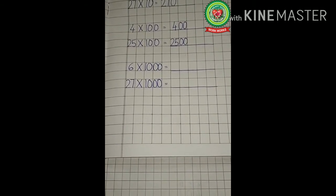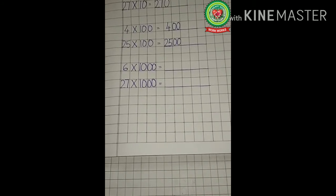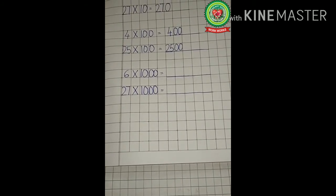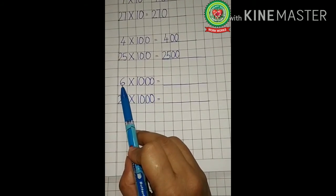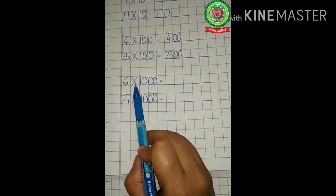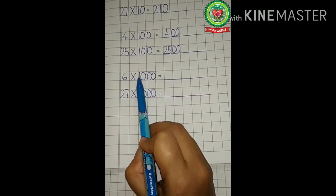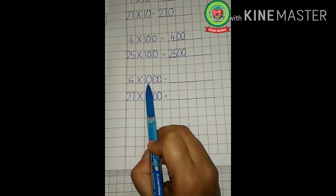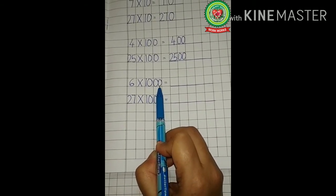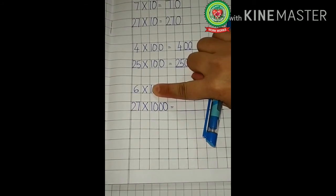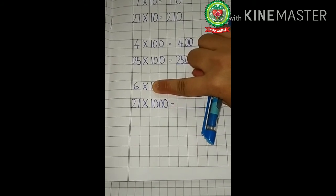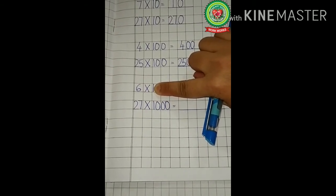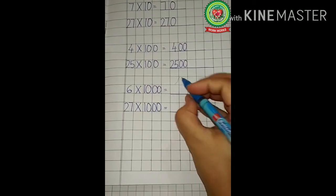Now we will learn how to multiply any digit with 1000. It is also very simple — the same rule applies. Read out the question aloud: 6 multiplied by 1000. Count how many zeros are there: 1, 2, 3. Now use your finger to hide all the zeros. After hiding all the zeros, what can you see? 6 multiplied by 1. So what is 6 ones? 6 ones is 6. So we will write 6 over here.